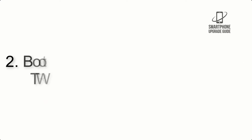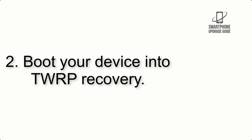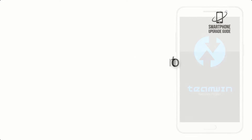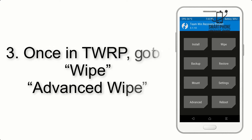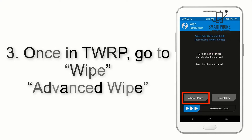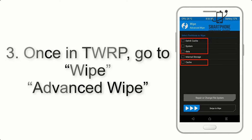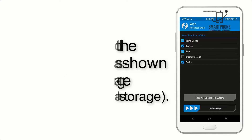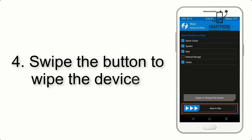Step 2: Boot your device into TWRP recovery. Once in TWRP, click on Wipe, then Advanced Wipe, and select the checkboxes as shown in the image, excluding internal storage.